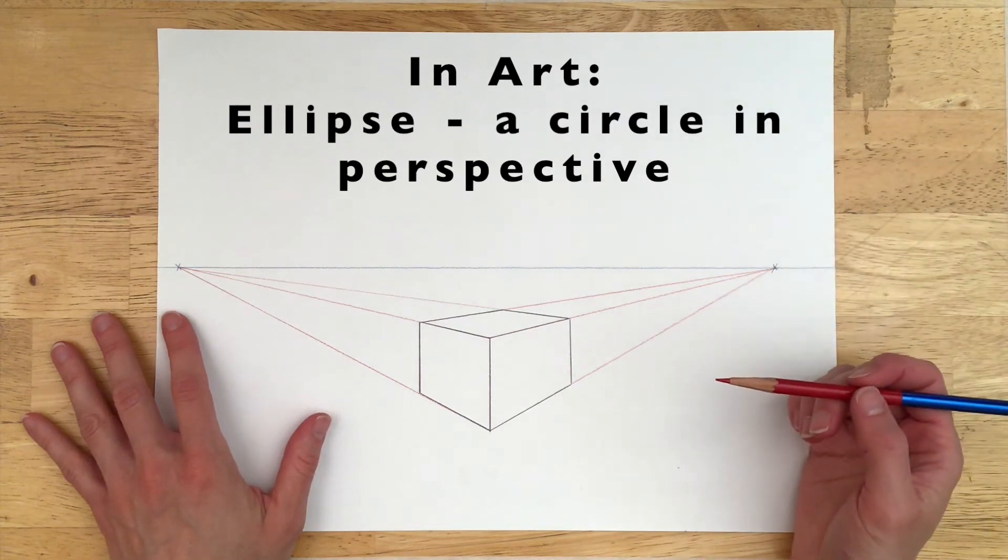So let's start with drawing a perfect circle. Start with a perfect square. Find center. Find the x and y axis. From here, draw a diamond connecting the x and y axis.